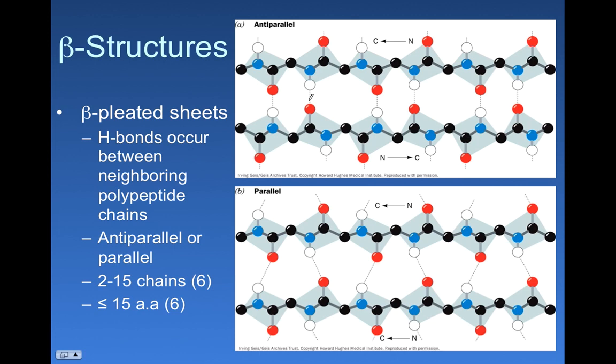We have hydrogen bonds that are not between R groups. They're between the fundamental atoms of the peptide chain. Now, what you can't see here is where the R groups are. We'll have to have a different picture to show how we're getting those away from each other to minimize steric strain.